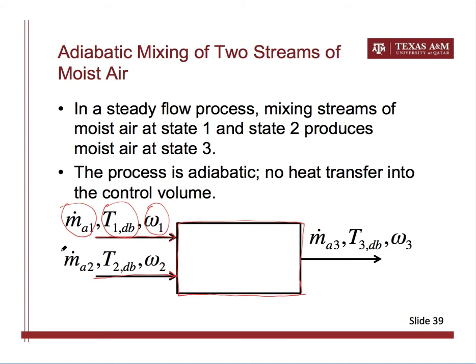Airstream one and airstream two each has a set of values for air flow rate, temperature, and humidity. After mixing, we have one mixed stream of air coming out of the control volume. This mixed airstream has a mass flow rate expressed in terms of dry air, and it must satisfy mass conservation. The mixed air will have a dry bulb temperature and a specific humidity that need to be determined based on the conditions of the two mixing streams — that's what the psychrometric chart analysis allows us to do.